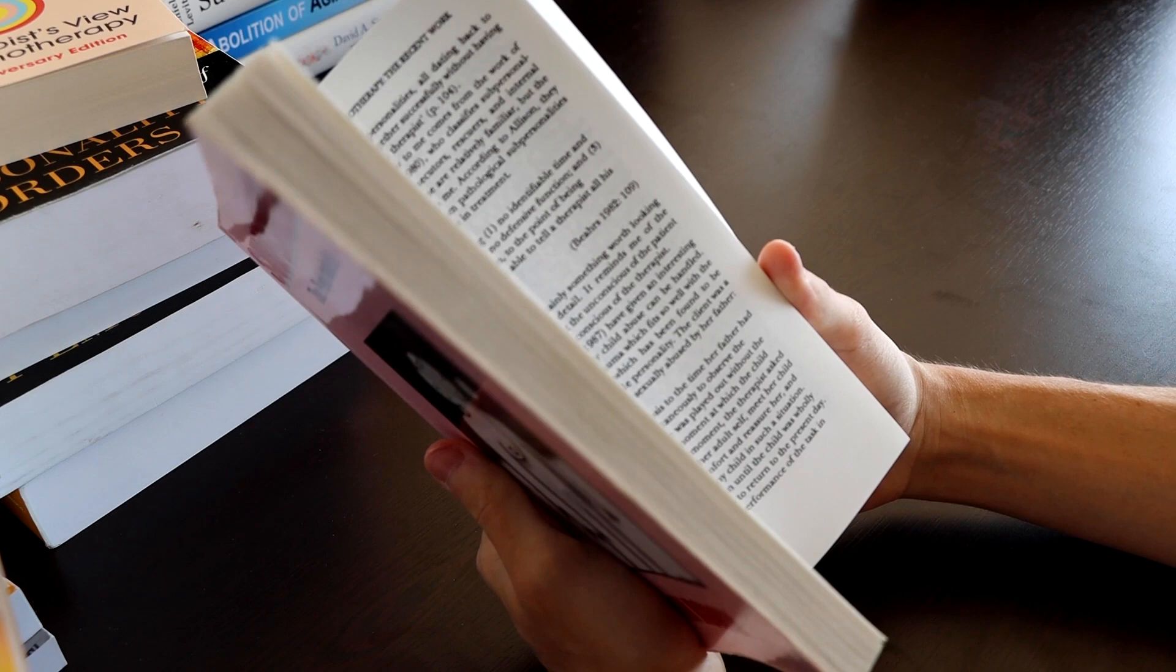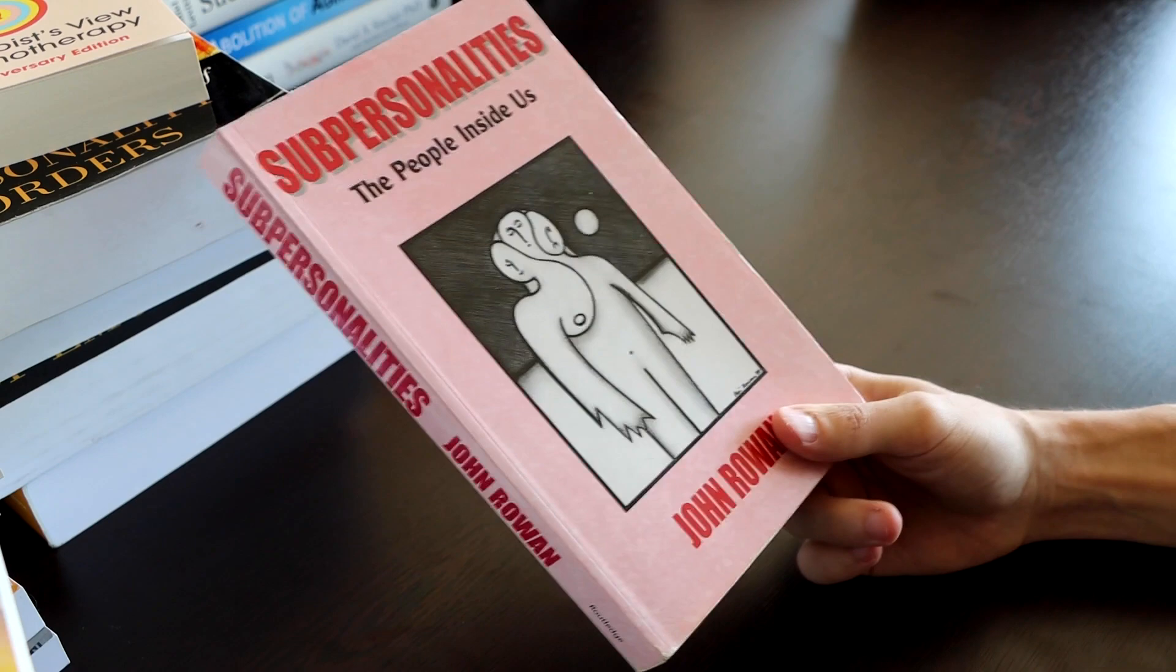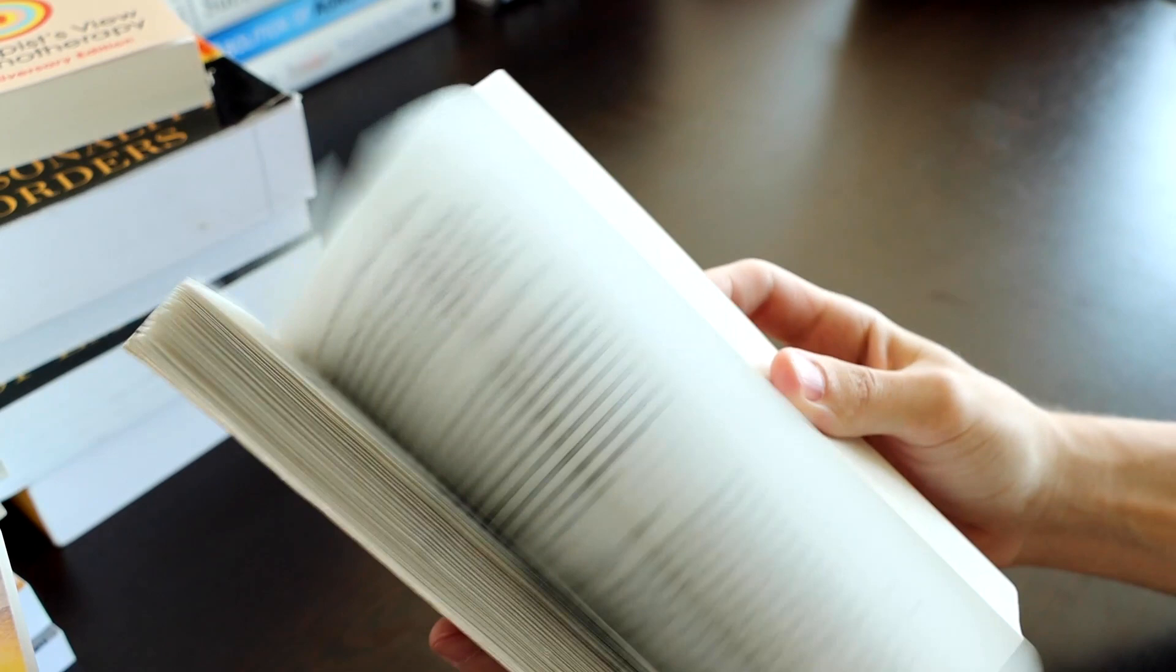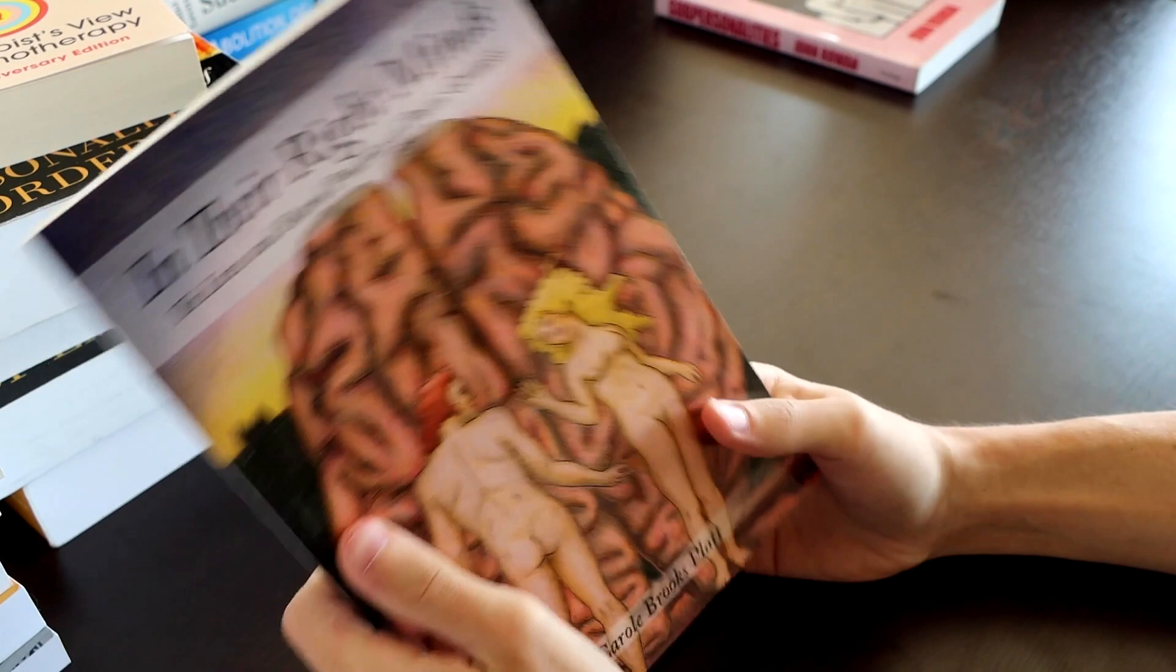The first book, Subpersonalities, is about the idea of having a distinction between someone's superficial personality or the personality that's present and an unconscious personality that they might not be aware of, or just some kind of unconscious aspect of who they are that shapes their subpersonality. It's like an old Freudian psychology book, a psychoanalytic book.